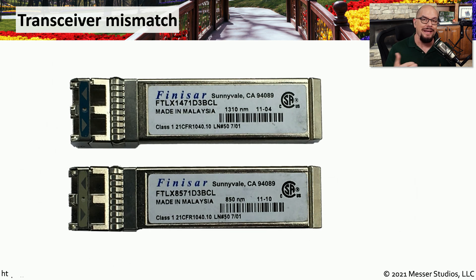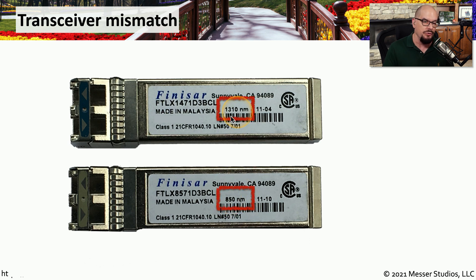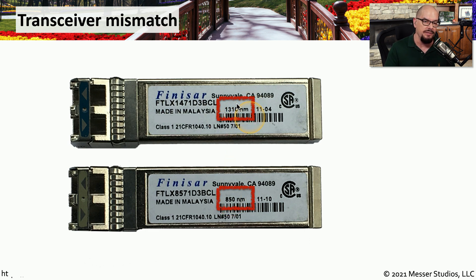This is an example of how easy it is to have a mismatch of transceivers. You have a pocket full of them, you plug one into one side and one into the other, and you connect your fiber — except in this case, one transceiver is for 1310 nanometers and the other is for 850. Otherwise, these transceivers look exactly the same, and you wouldn't know unless you looked at the specifications on the transceiver itself.